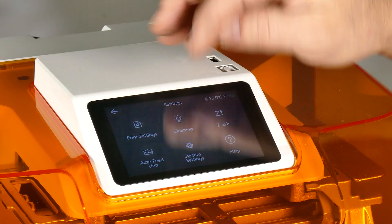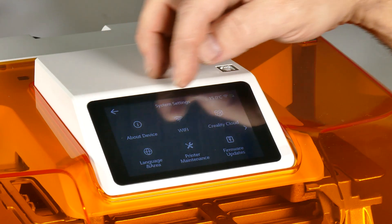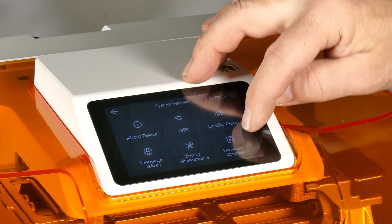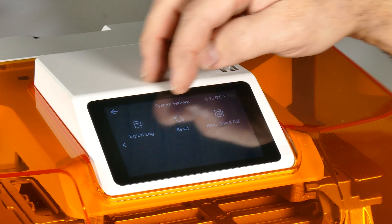Under the system settings you get access to the Wi-Fi, you can set up your Creality Cloud and some of the printer maintenance, and you can do your firmware updates.